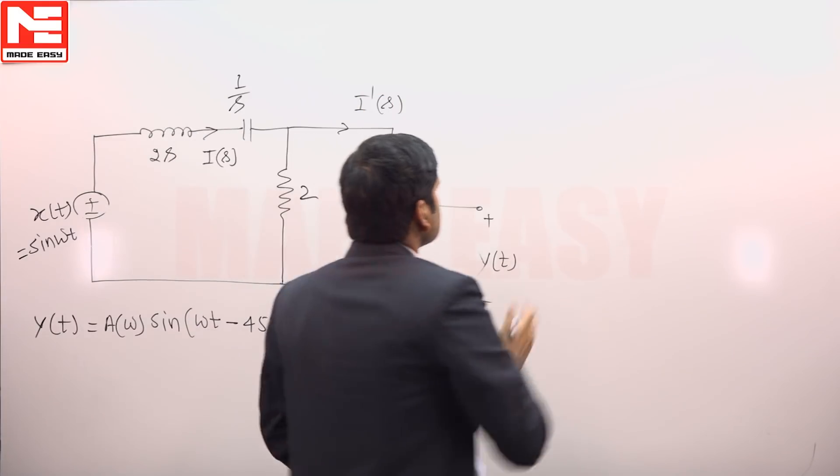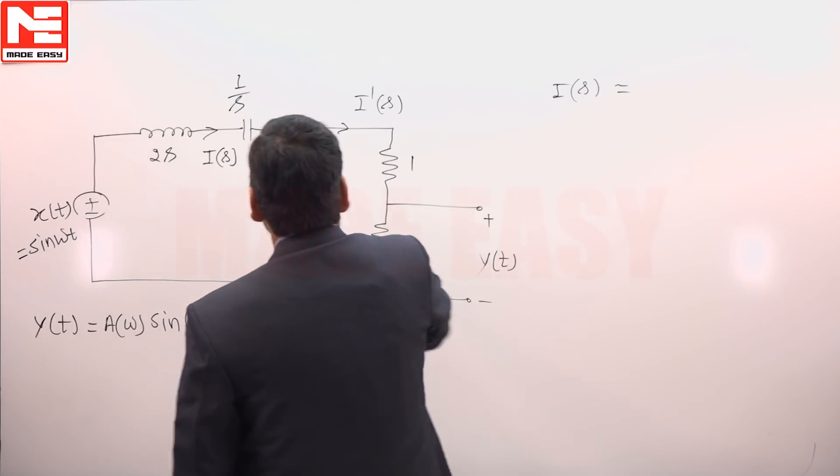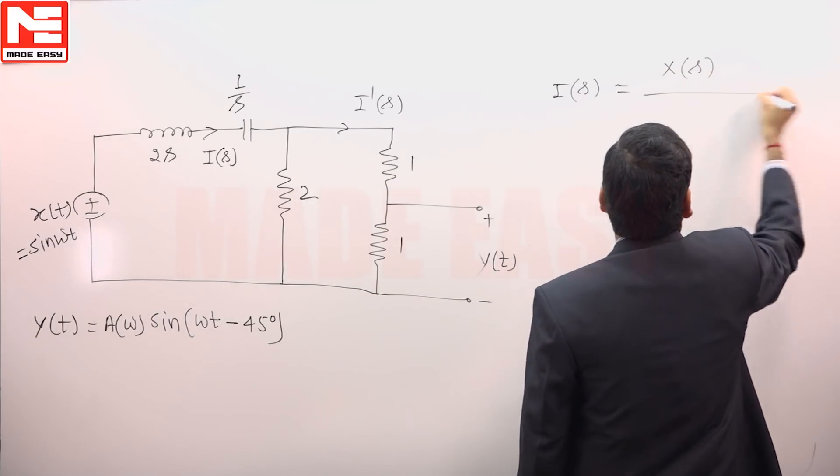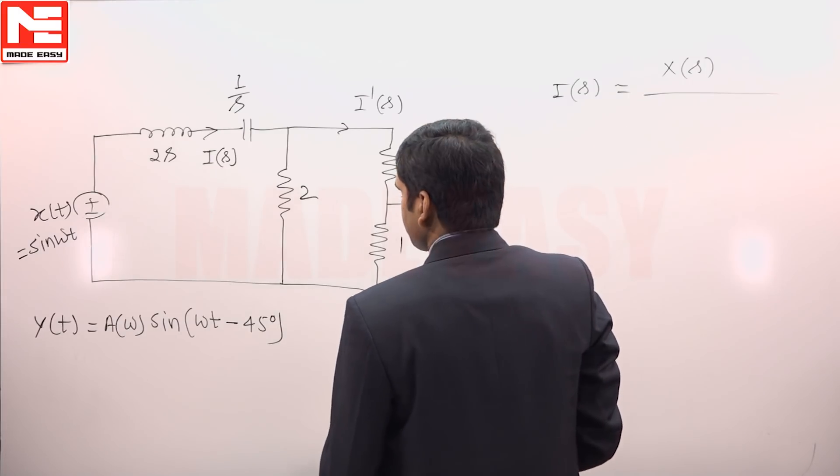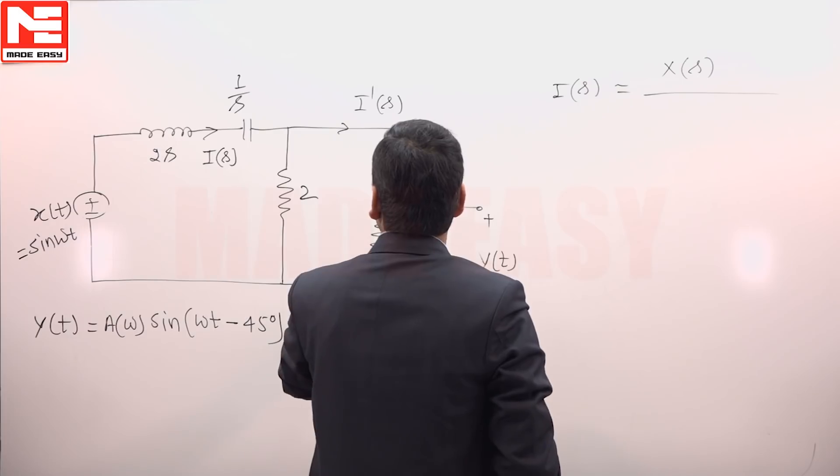i(s) can be calculated as the voltage applied divided by total resistance. Voltage applied is x(s) divided by total resistance that is 2s plus 1/s, then parallel combination 2 parallel to 1.